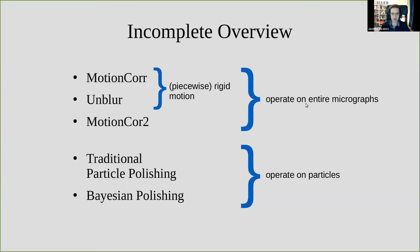There have been many motion correction methods proposed over the years. These fall into roughly two categories. At the top are the pre-processing methods that operate on entire micrographs — you would run those at the very beginning before you have any particles or reconstructions. At the bottom are the post-processing methods that operate on particles and try to increase the resolution of an already existing reconstruction. Bayesian polishing falls into the latter category.